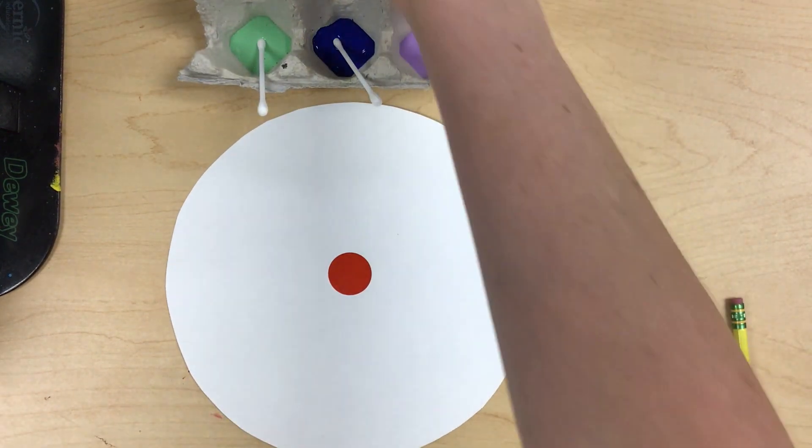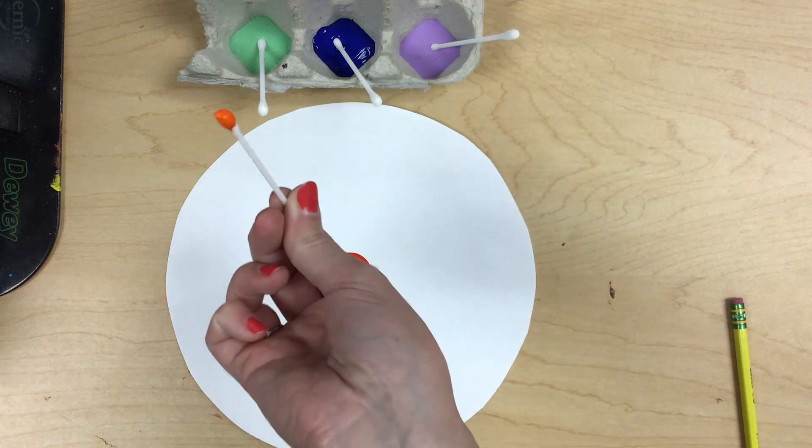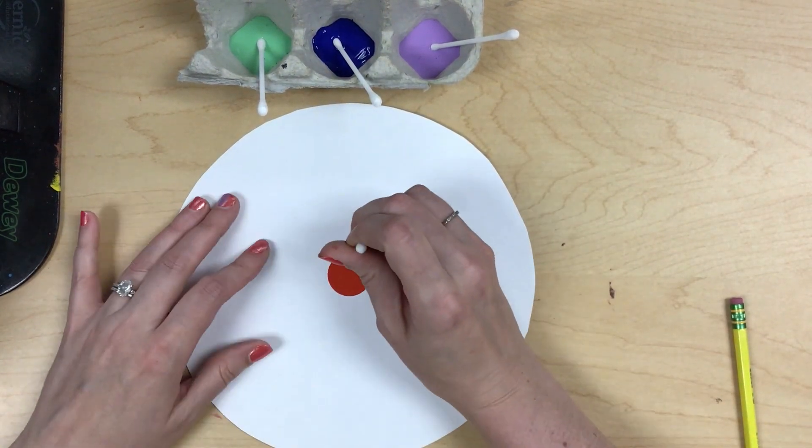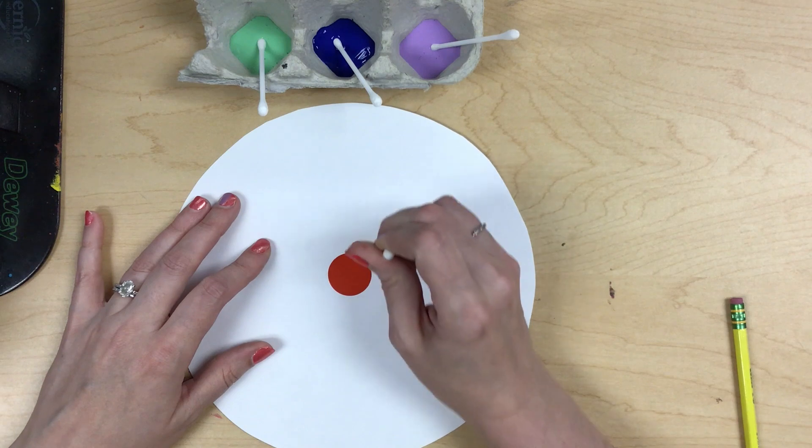So I'm going to start with orange. I've got my orange Q-tip. I am going to start by making dots around my dot circle.